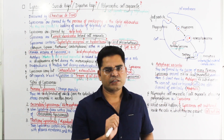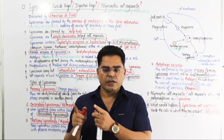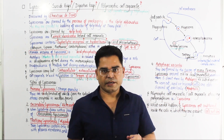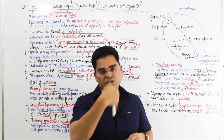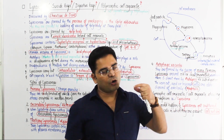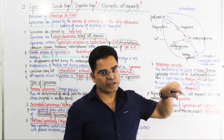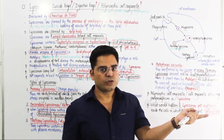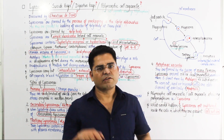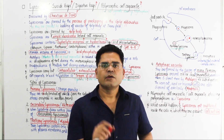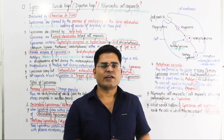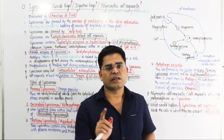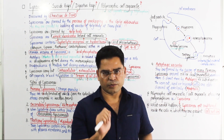First of all, when the trans-face of the Golgi body buds off, that vesicle is converted into a lysosome. So the formation of lysosomes is attributed to the Golgi body — that is the answer you need to give regarding lysosome formation.